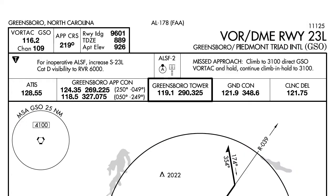Some approaches, such as this VOR DME runway 23L, have a slash between VOR DME — or it may be between localizer and DME or some two components that are required together. The slash indicates that both components are required, so you must have a VOR and a DME receiver to fly this approach.